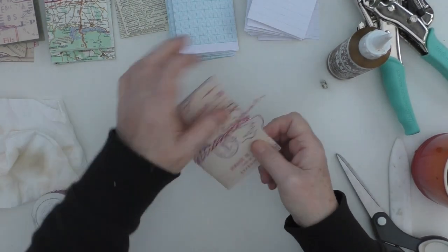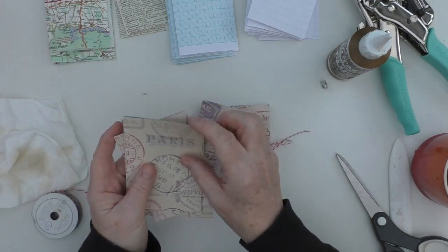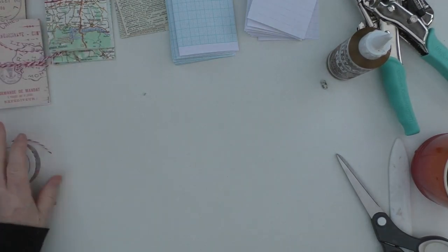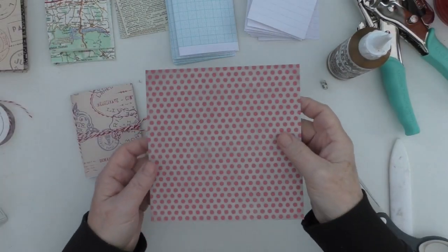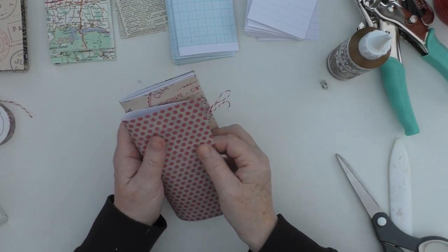But I'm going to show you a second version using just a six by six piece of paper. But as I say, you could get six little booklets, or at least the cover anyway, from one sheet of 12 by 12. So here's an alternative version.